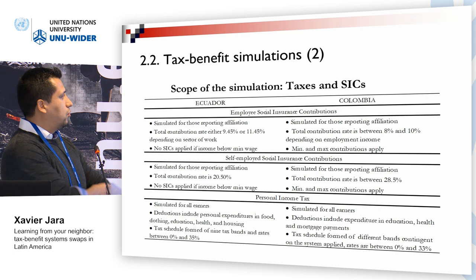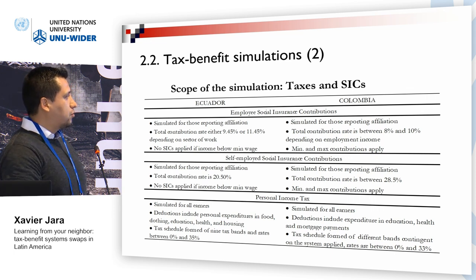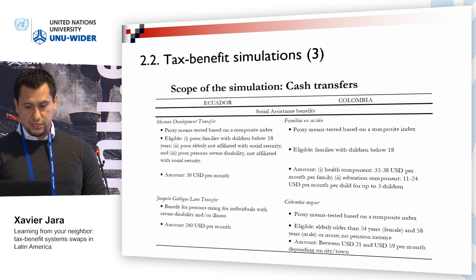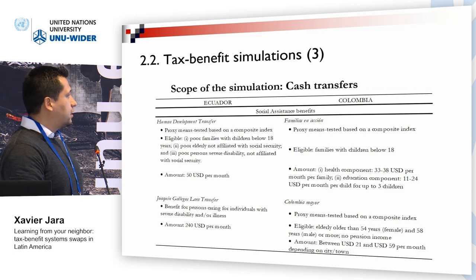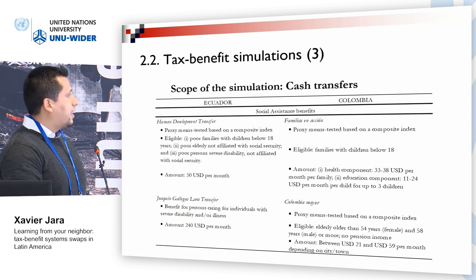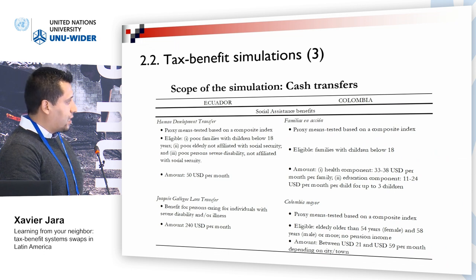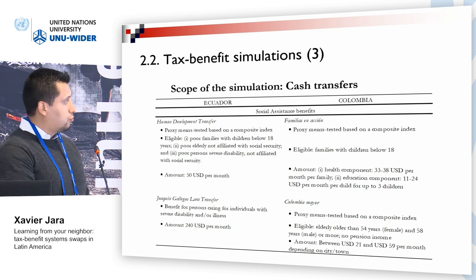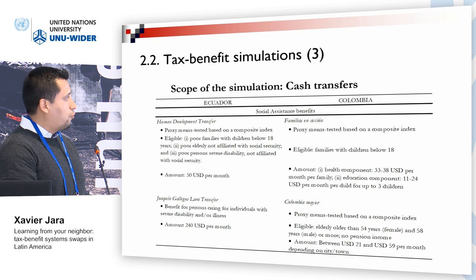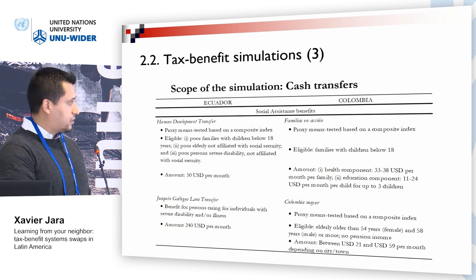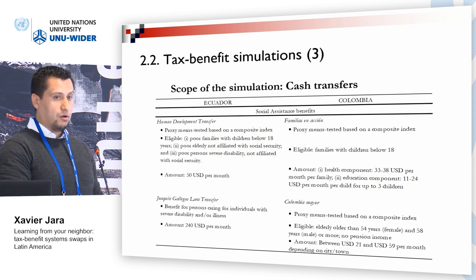In terms of scope of the simulations, for both countries we simulate employee and self-employed social insurance contributions, personal income tax, and the main cash transfers in each country. For Ecuador, the human development transfer is a proxy means-tested benefit targeting poor families with children below 18, the elderly population, and people with disabilities, with an amount of $50 per month. For Colombia, there are two equivalent benefits: Familias en Acción, targeting families with children with health and education components, and Colombia Mayor, targeting the elderly with amounts between $21 and $59 per month depending on area.